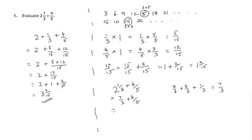And again, similarly, we'll change both of these to fifteenths by multiplying top and bottom here by five. Five times seven is thirty-five, five times three is fifteen. Multiply top and bottom here by three — four times three is twelve, five times three is fifteen. And there we have thirty-five fifteenths and another twelve fifteenths.